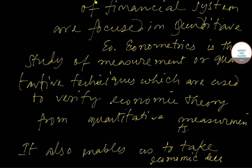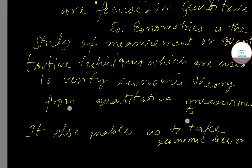So quantitative economics is actually the measurement of the characteristics of financial systems. Every financial system has some characteristics which we need to deal with when making decisions or studying financial systems. Econometrics is the study of quantitative techniques or measurements, mainly used to verify economic theory and to make economic decisions.